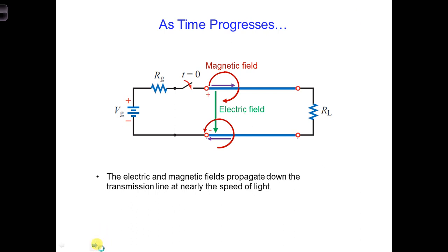Instead, as time progresses, the electric and magnetic fields transport the signal power down the transmission line between the two conductors at nearly the speed of light. We'll be exploring this a lot more in this class.